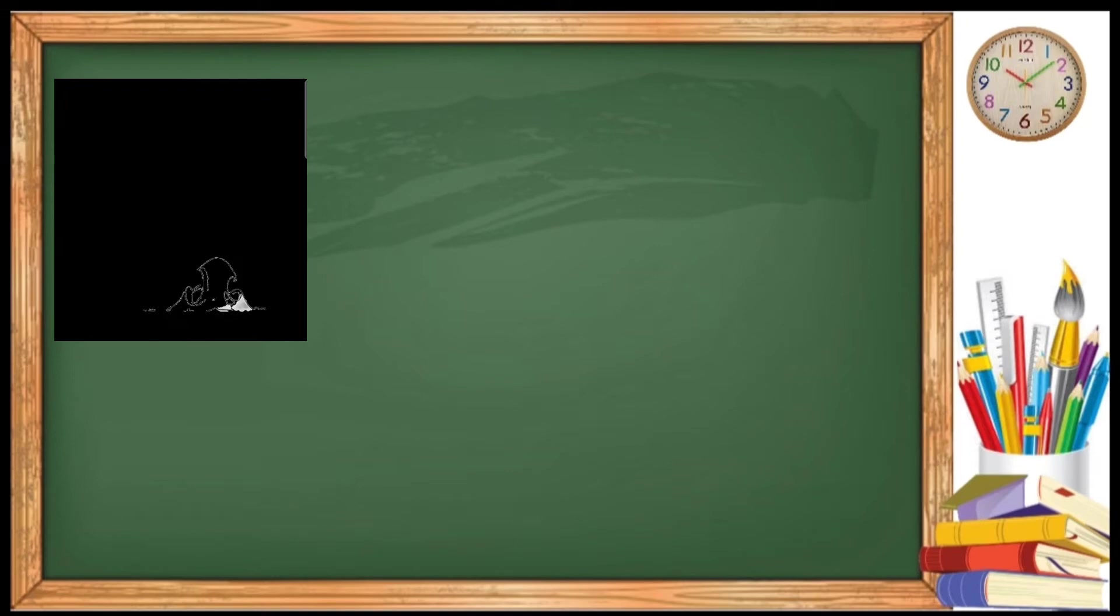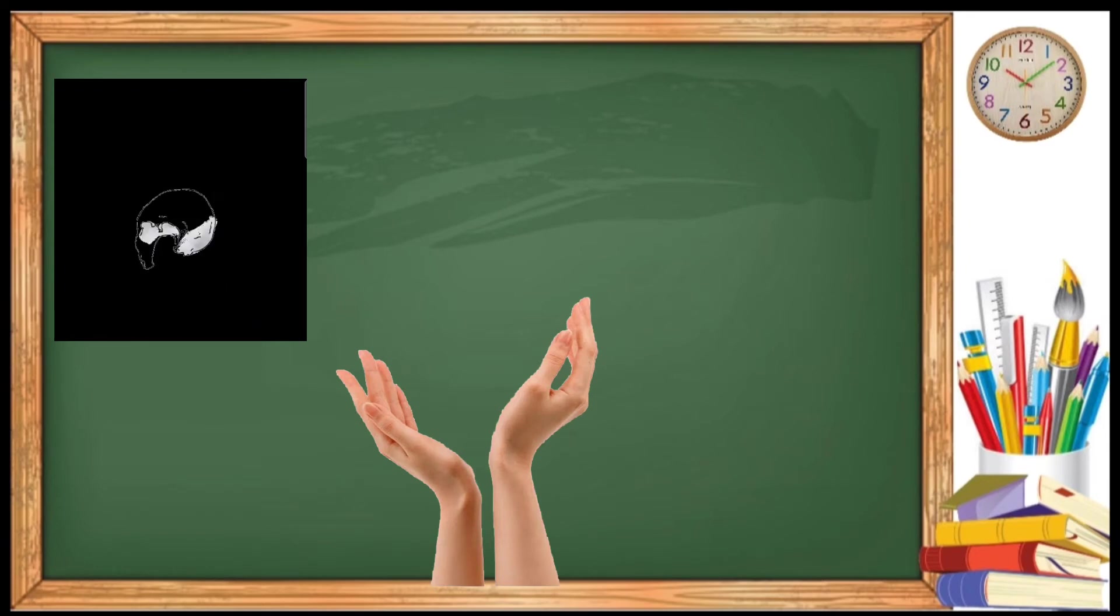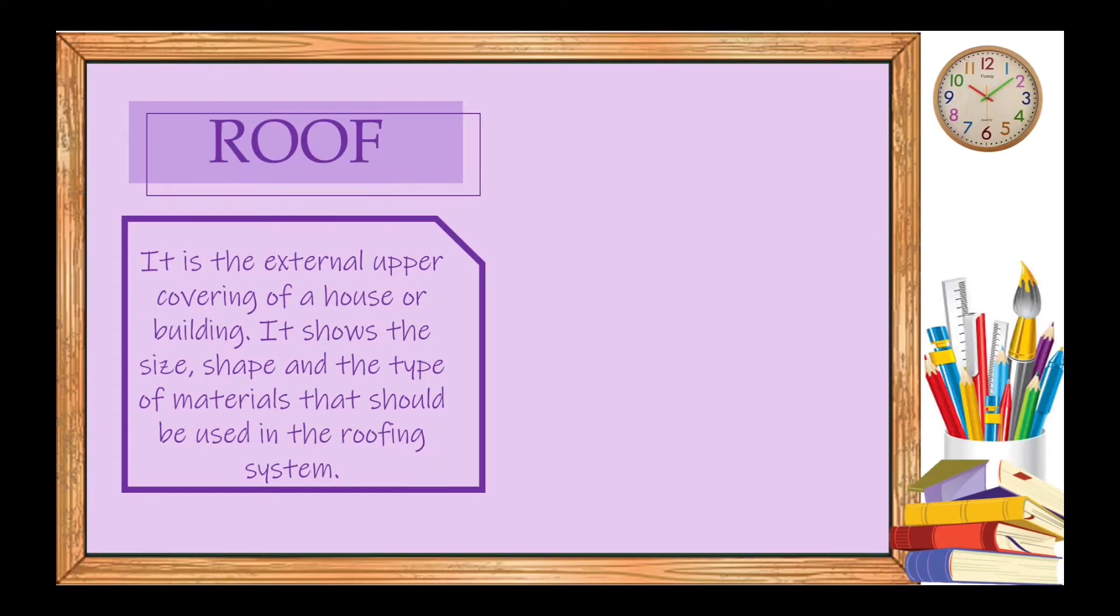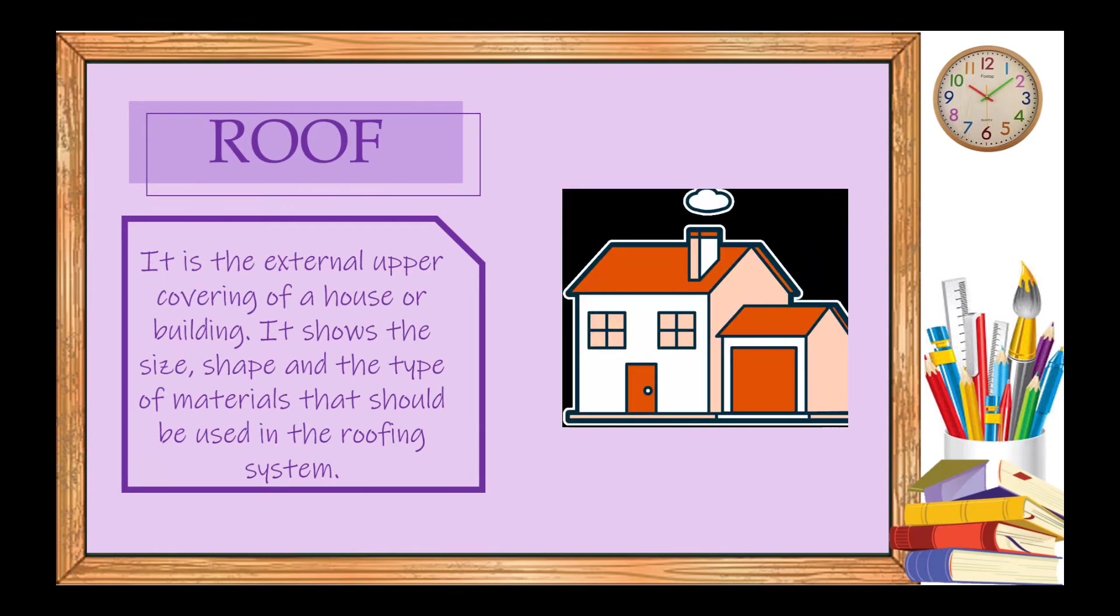We all know that skull is the bone that protects the brain. We also have skin that protects us from harmful ultraviolet rays. And for us, to protect from rains and sun rays, we have the roof of the house. The roof is the external upper covering of a house or building, including the roof framing and the roofing material. The design of the floor plan affects the appearance of the roof, and in turn, it also affects the exterior appearance of the residential building.